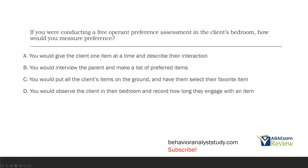C: you would put all the client's items on the ground and have them select their favorite item. Not quite — that's more like a multiple stimulus preference assessment. What you're going to do with a free operant is observe the client in their bedroom and record how long they engage with an item. You're sitting in the corner watching and learning from what they engage in. The answer is D: you would observe the client in their bedroom and record how long they engage with an item.